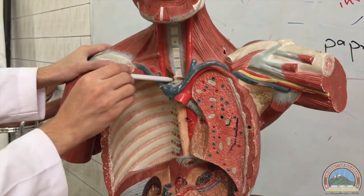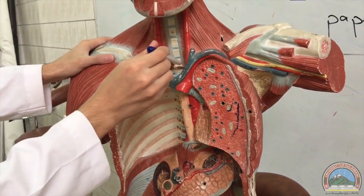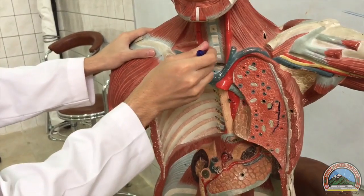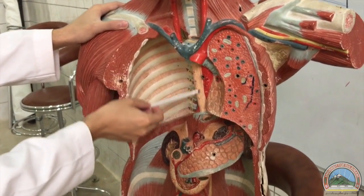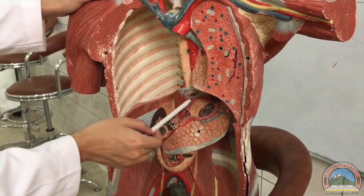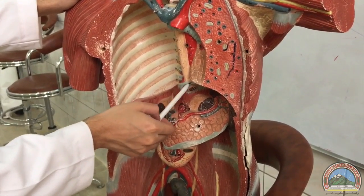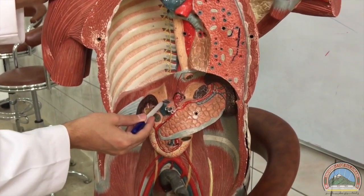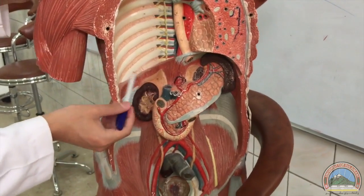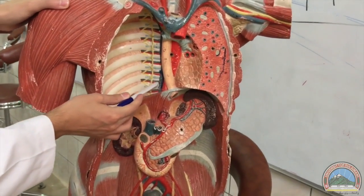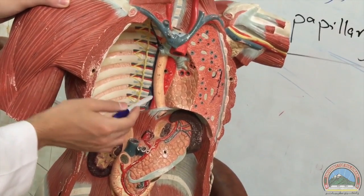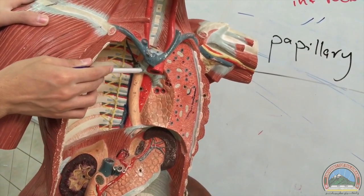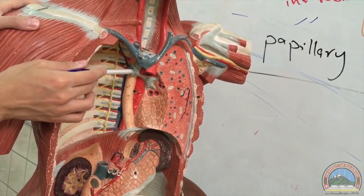This is the trachea and behind it is the esophagus, going through the esophageal opening. This is the inferior vena cava. And this is the azygos vein. The azygos vein will join the superior vena cava, but the joining has not been shown here.